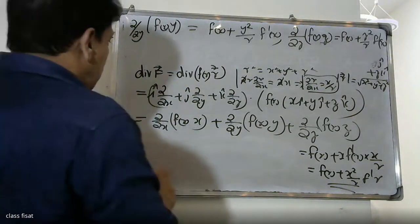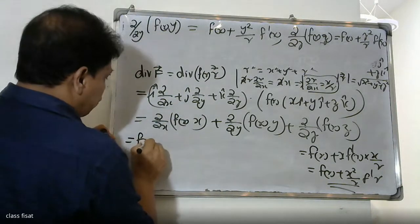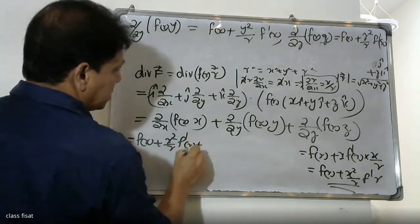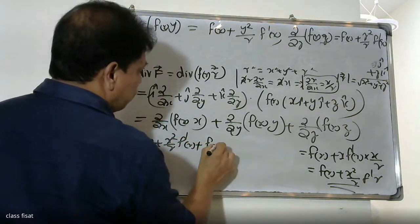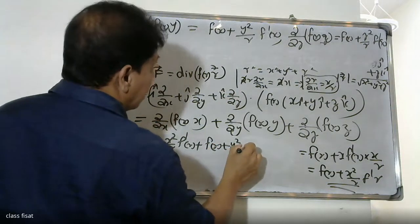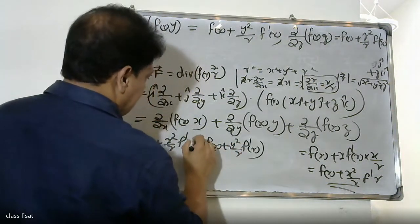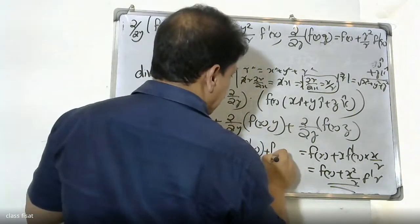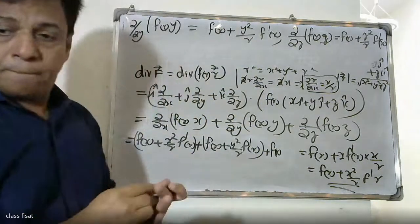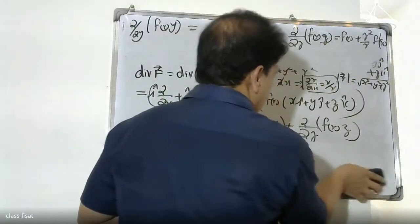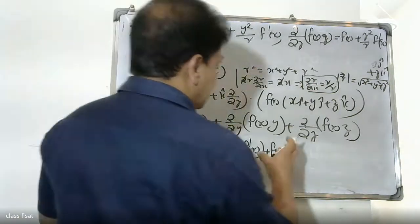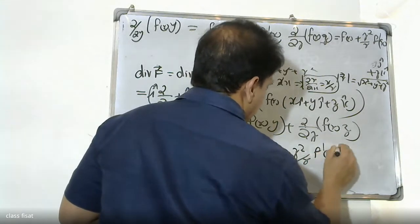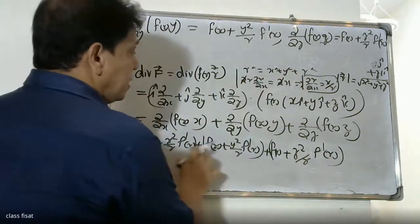Substituting all three terms: dou by dou x gives f(r) plus x squared by r times f dash r, plus dou by dou y gives f(r) plus y squared by r times f dash r, plus dou by dou z gives f(r) plus z squared by r times f dash r.